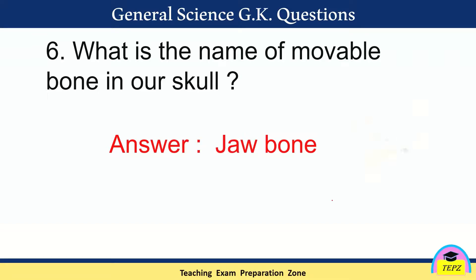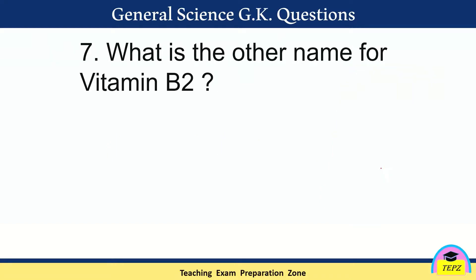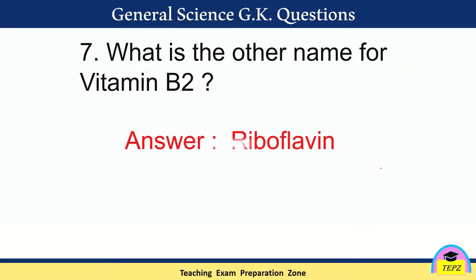What is the name of the movable bone in our skull? The answer is the jaw bone. The bones in our skull are immovable — the joints are fixed and cannot move. But the one bone that can move in the skull is the jaw bone, specifically the lower jaw.